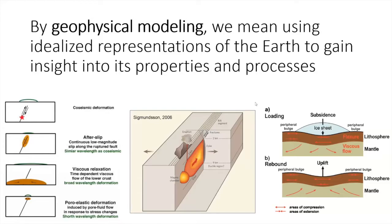The middle panel shows a magmatic system with a magma chamber, a dike, and a volcanic eruption — all of which will deform the surface if they're large enough and shallow enough. On the right we have the phenomenon of post-glacial rebound: ice loading causing subsidence and then rebound causing uplift, something we can potentially measure with geodetic data.